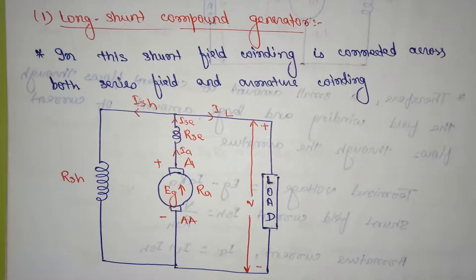Hi friends, today I am going to discuss the long shunt compound generator. First we saw the shunt compound generator, next we are looking at compound generator types. There are two types of compound generator: first one is long shunt compound generator, second one is short shunt compound generator.